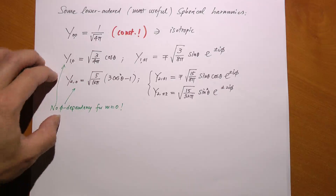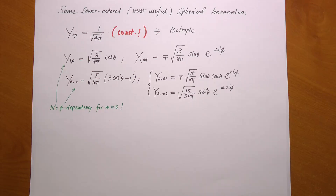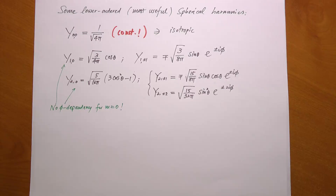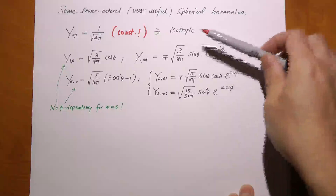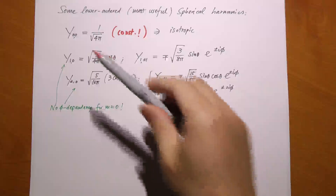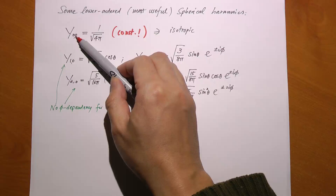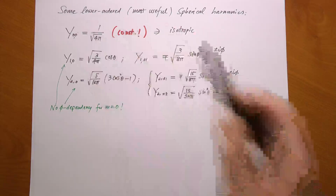The general expression for the spherical harmonic functions can be pretty complicated. Even though the phi part is quite simple — e to the plus or minus im phi — the theta part is the associated Legendre polynomial, usually expressed as a sum of series. At least we can look at what happens when l and m are not very large, and these are usually the most interesting and practically important ones. The lowest order is when l equals zero and m equals zero.